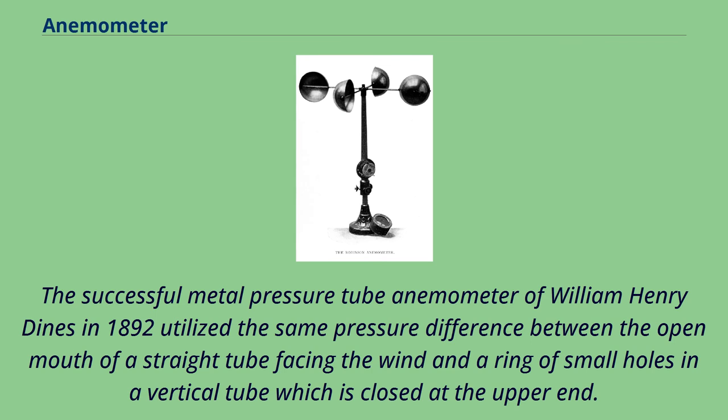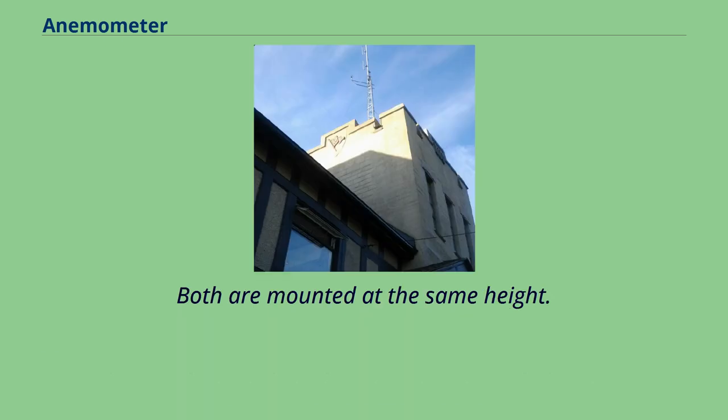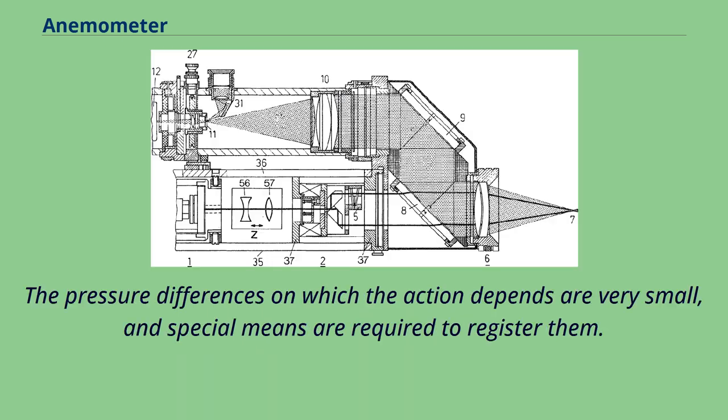The successful metal pressure tube anemometer of William Henry Dines in 1892 utilized the same pressure difference between the open mouth of a straight tube facing the wind and a ring of small holes in a vertical tube which is closed at the upper end. Both are mounted at the same height. The pressure differences on which the action depends are very small, and special means are required to register them.